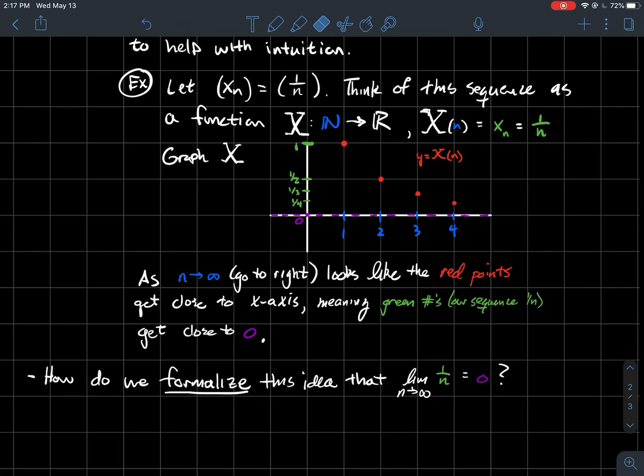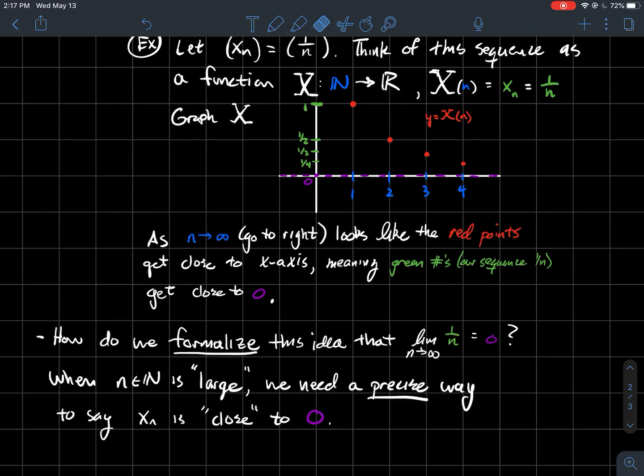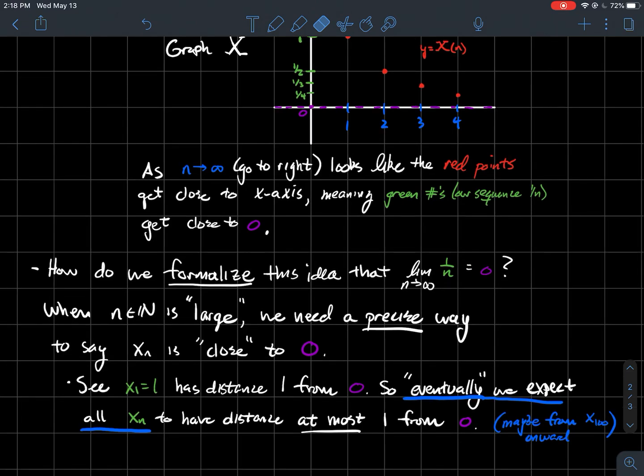Remember, we say limit for sequences, it's pretty common that they won't even put the n goes to infinity. So if you just see lim right there, you know you're dealing with the limit of a sequence. So how do we formalize this idea that those red points, my sequence, should be getting really close to zero. When n is large, we need a precise way to say that xₙ is close to zero. We need a precise way to describe this concept of close. And that's where mathematical language comes in.